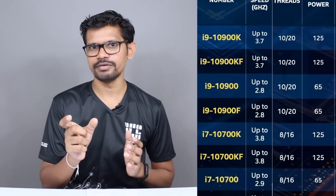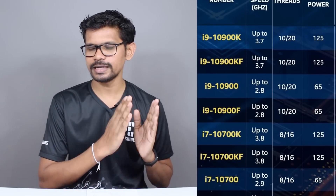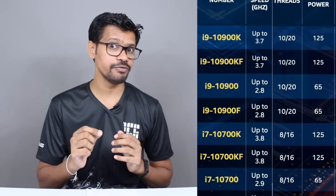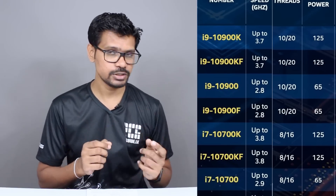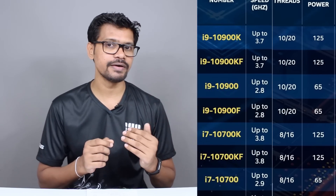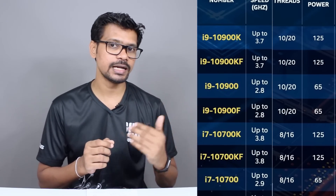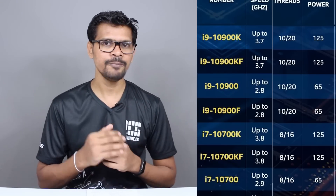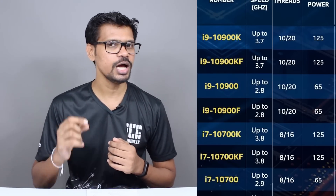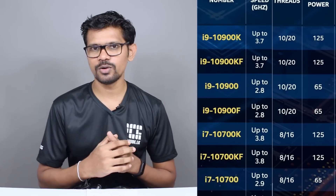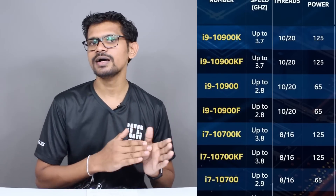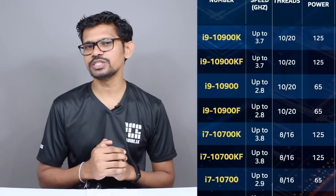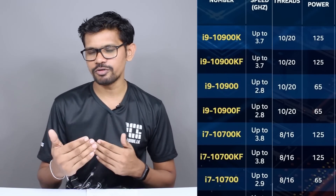Looking at the specs, the base clock comes with a 125W TDP for the K-series chips. There are also 65W variants for lower-power configurations. The high-end 125W TDP chips deliver high performance, while the standard options sit around 65W.